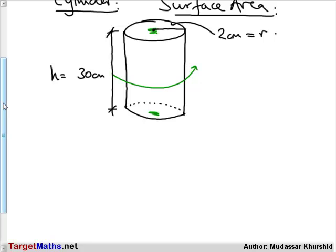that is in the shape of a circle. So, we have a circle at the top and if you look at the bottom of the cylinder, that is also a circle.